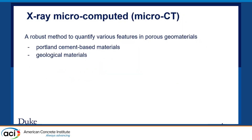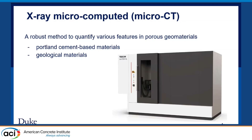We have this macro CT machine, which is a robust method to quantify features in porous geo materials. We are currently using Portland cement-based materials and other geological materials, but for the current research it's only for sandstones. The CT scanner we have is from Tescan — it's called the UniCT XL. It's a huge CT scanner; you can put a 10-feet-tall core inside and scan it straight through.